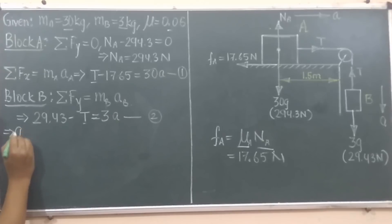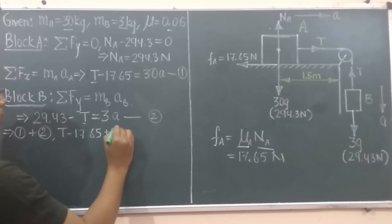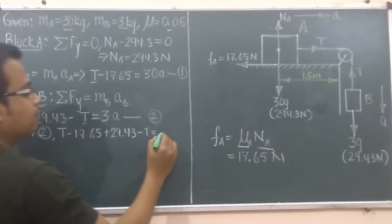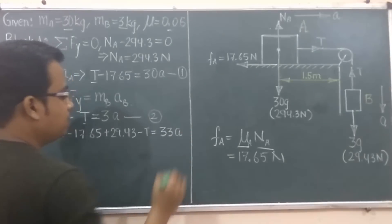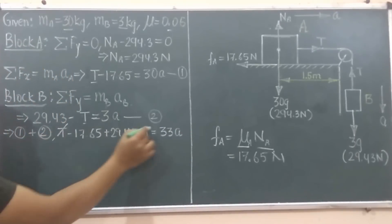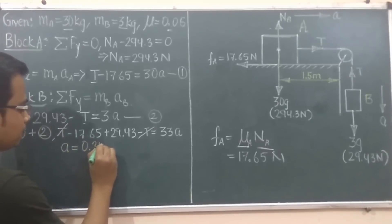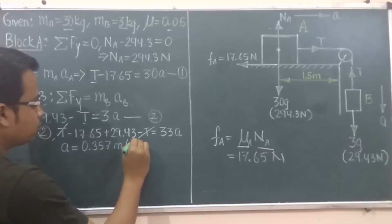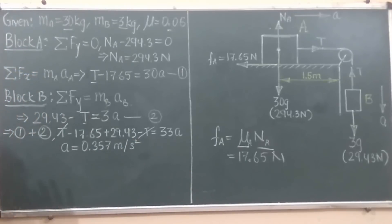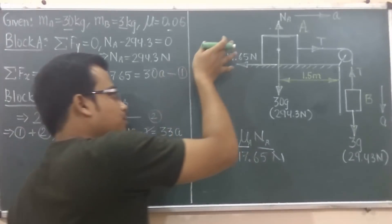You can clearly see in equation one this T is positive, in equation two this T is negative, so you can add both these equations and T will cancel out automatically. The entire equation will be in terms of a and you can calculate the value of a. Equation one plus equation two: T minus 17.65 plus 29.43 minus T equals 30a plus 3a, and this is going to be 33a. You just need to solve this equation and you are going to get the value of acceleration equal to 0.357 meters per second squared.